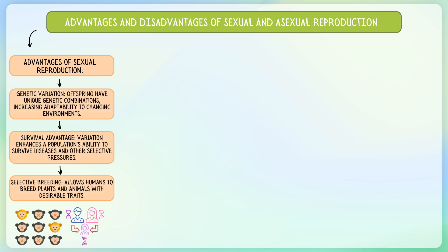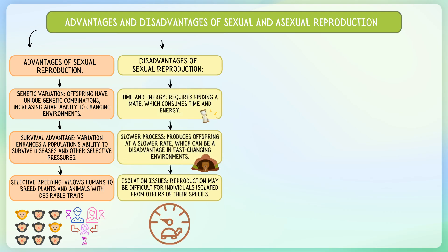In today's lesson, we explored the advantages and disadvantages of sexual and asexual reproduction. Sexual reproduction, involving two parents, creates genetically diverse offspring, which enhances a species' ability to adapt and resist diseases. However, it requires more time, energy and a mate, resulting in slower reproduction.